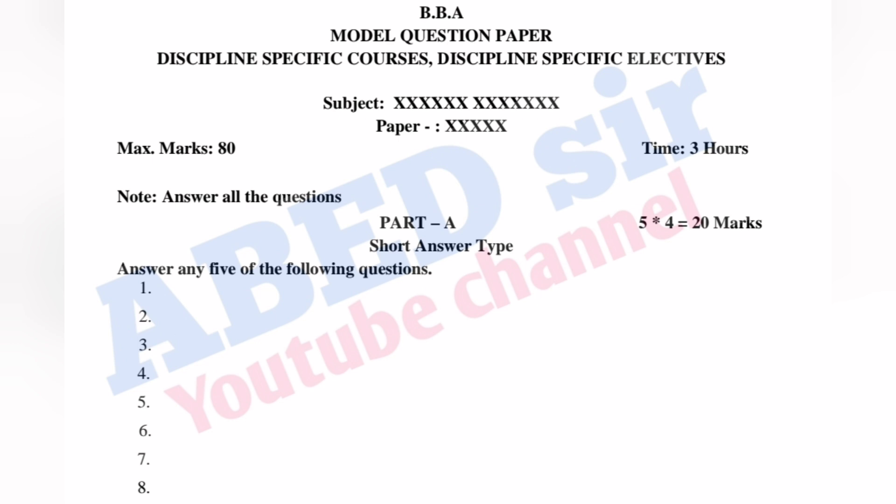In Part A, short questions will be asked. A total of 8 questions will be asked; out of 8, you have to answer any 5. Each question carries 4 marks, so 5 fours of 20 marks you will get from Part A.